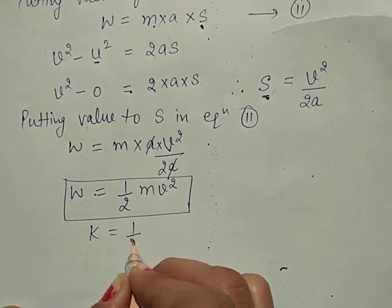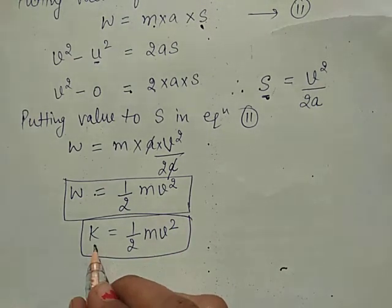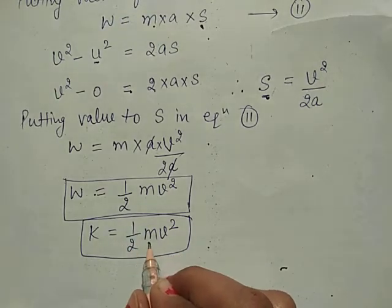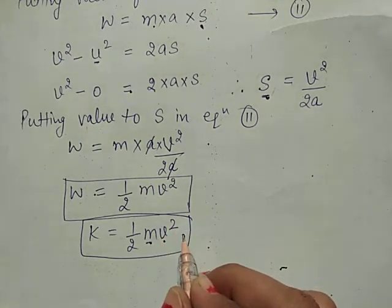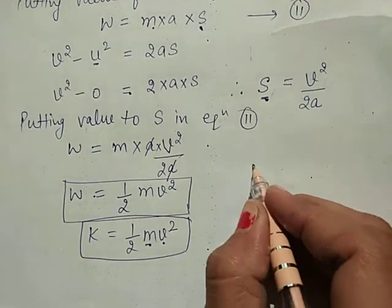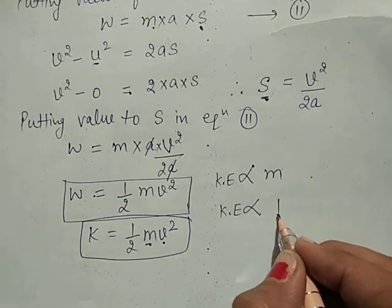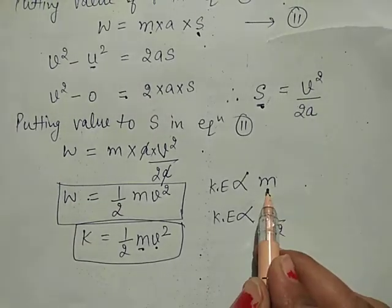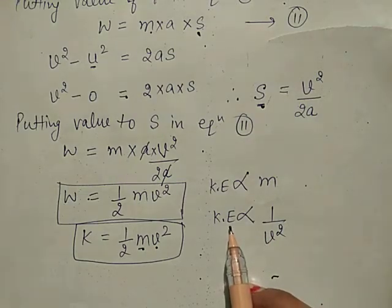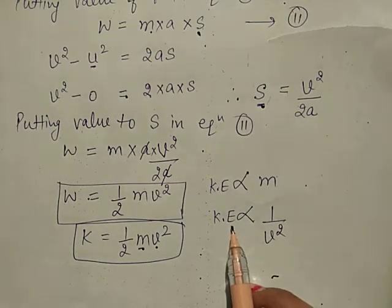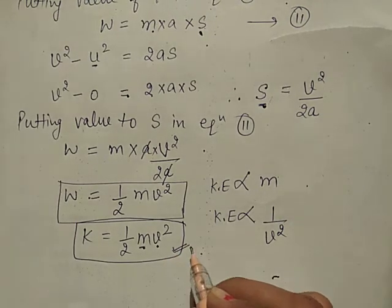This work done is equal to the kinetic energy. So kinetic energy K = ½MV². The kinetic energy equals half times the mass of the body times the square of its speed. Kinetic energy is directly proportional to mass and directly proportional to the square of speed.